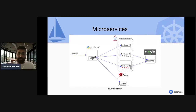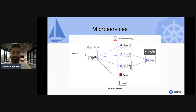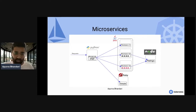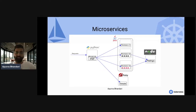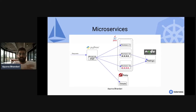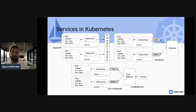In the microservice architecture slide, you can see multiple services running — Python, Java, Ruby, Node — all language-independent and loosely coupled. Traffic is served by the Python application, which calls the Java service, then Ruby, and the processed data is sent to the Node.js application.